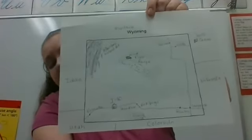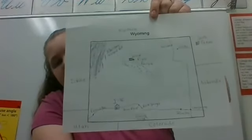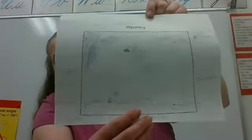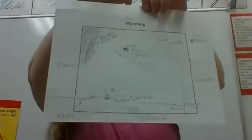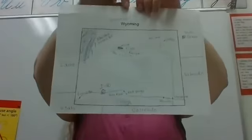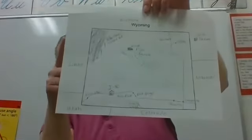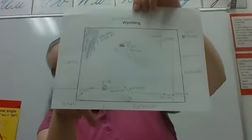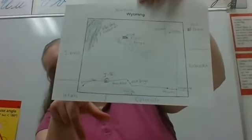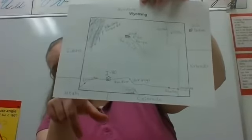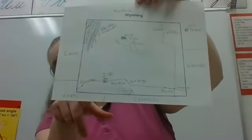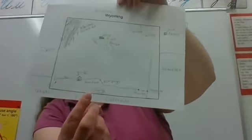At the very top we have Montana — Wyoming is written there to show this is the state of Wyoming, but Montana is our northern border. On our western side, Idaho is our western border, but Utah also forms part of our western border and part of our southern border, and Colorado forms most of our southern border.